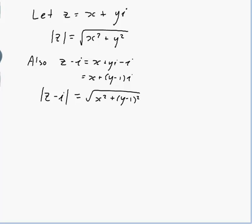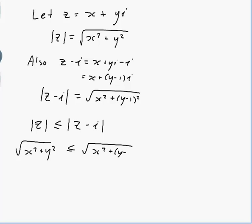Okay, and so I want mod of z is less than or equal to mod of z - i, which would be √(x² + y²) ≤ √(x² + (y - 1)²).